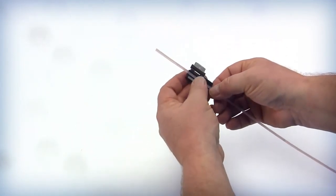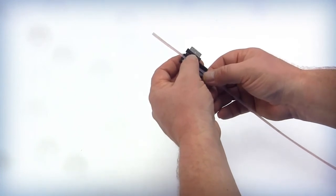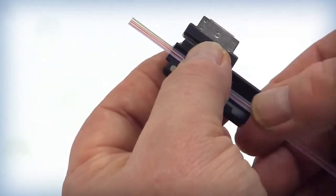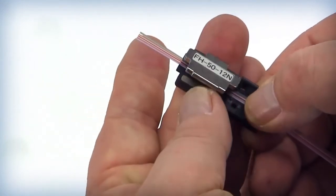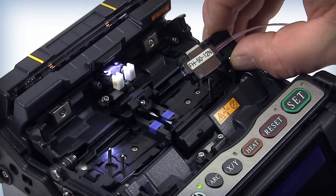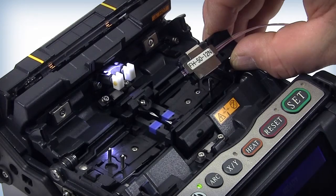AFL recommends a consistent method of loading fibers into fiber holders. This helps preserve orientation and prevents transposition. Always install ribbon fiber with the blue fiber toward the hinge of the fiber holder, and always install the fiber holder into the fusion splicer with the hinge to the heater.